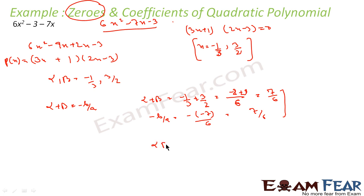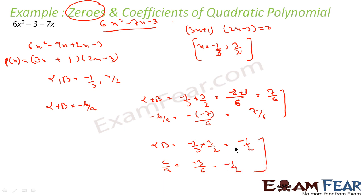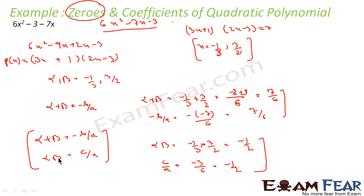Similarly, α·β = (−1/3) × (3/2) = −1/2. And C/A = −3/6 = −1/2. Both values are the same. Thus here also we see that α + β = −B/A and α·β = C/A.